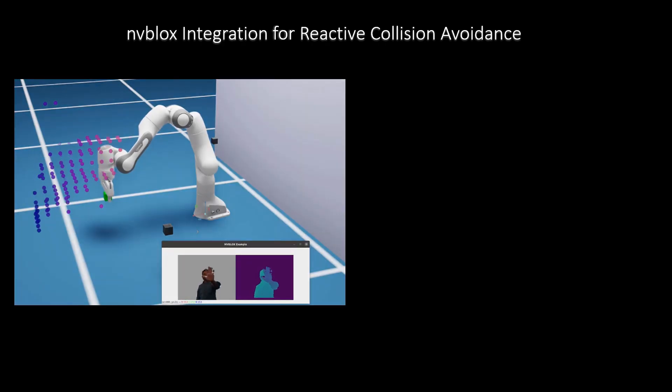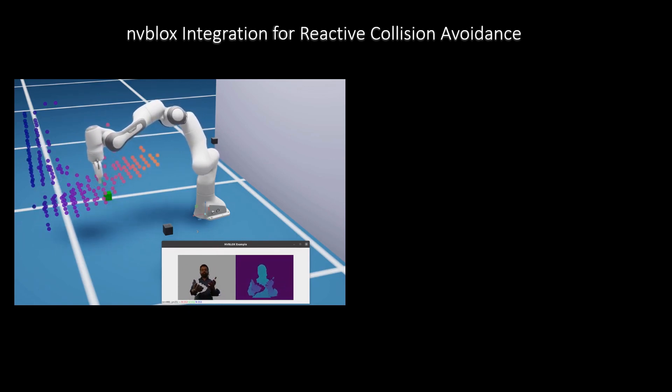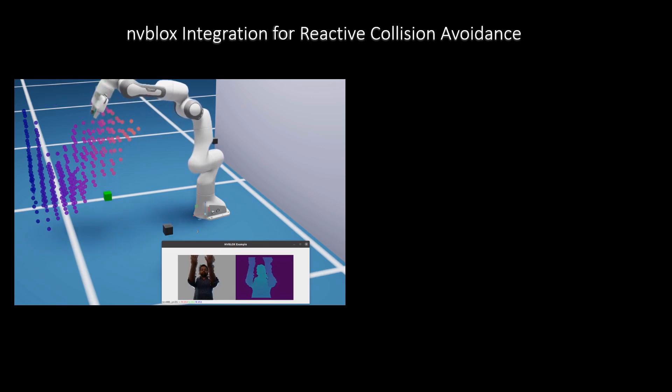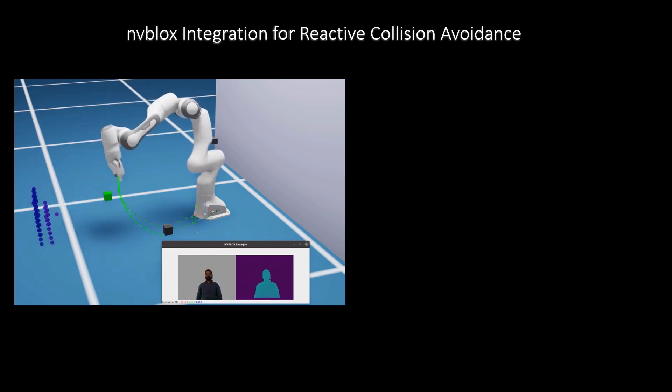Integrating with NVblox enables the robot to react to obstacles perceived from a depth camera. Here we show how NVblox can be used to avoid a human as seen from a depth camera. Kurobo's MPPI controller is running on the Franka robot, which is trying to maintain its end effector at a specific target while avoiding a human as seen from the depth camera.